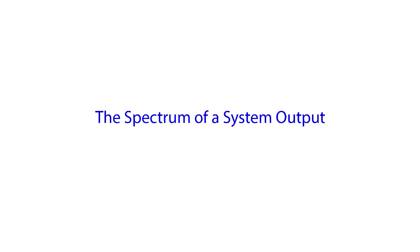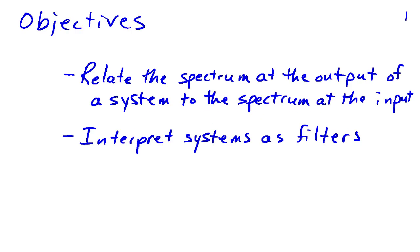The spectrum of the output of a system is easily obtained from the input spectrum and the frequency response of the system. Our objectives here are to relate the spectrum at the output to the spectrum at the input using the frequency response. This leads naturally to an interpretation of systems as filters.